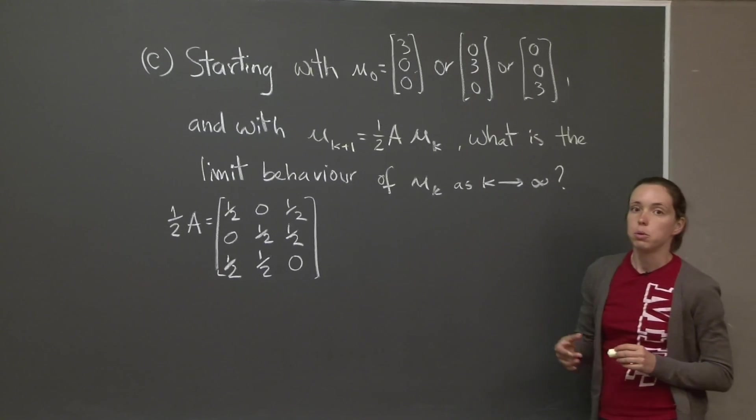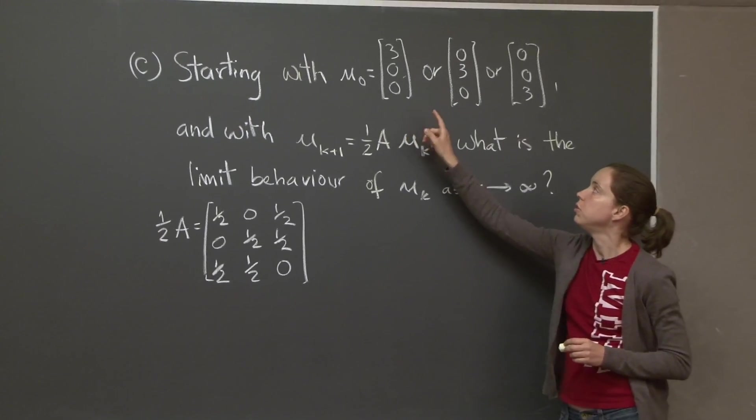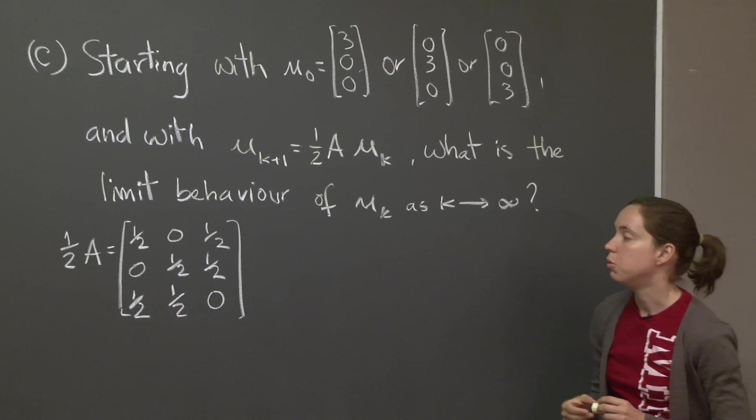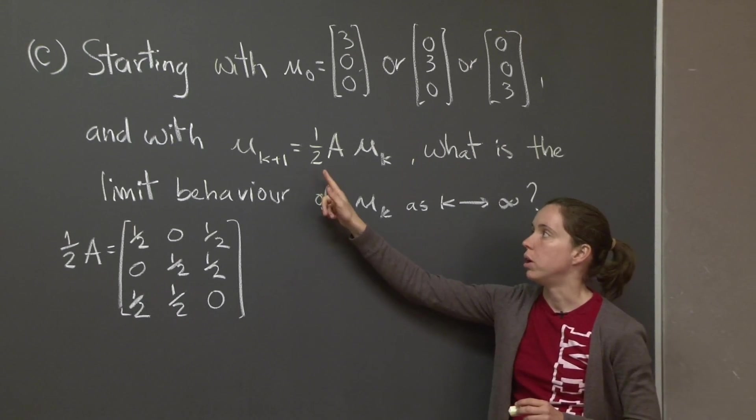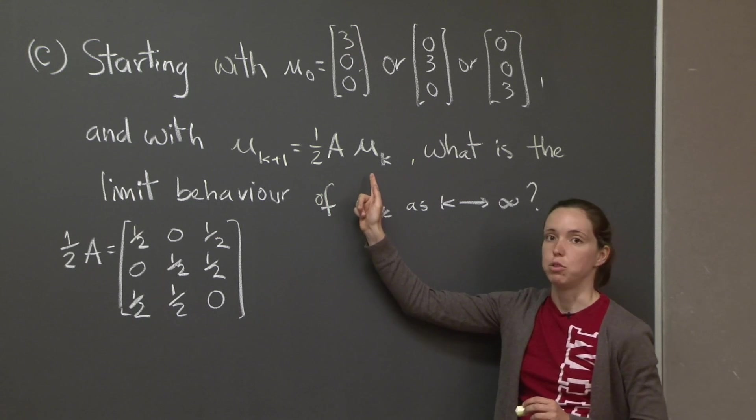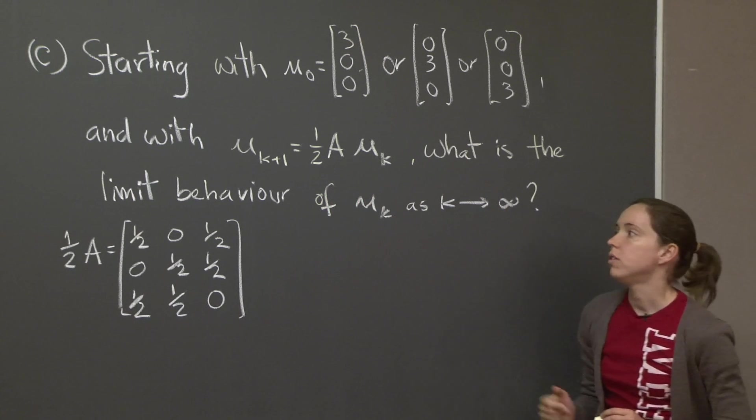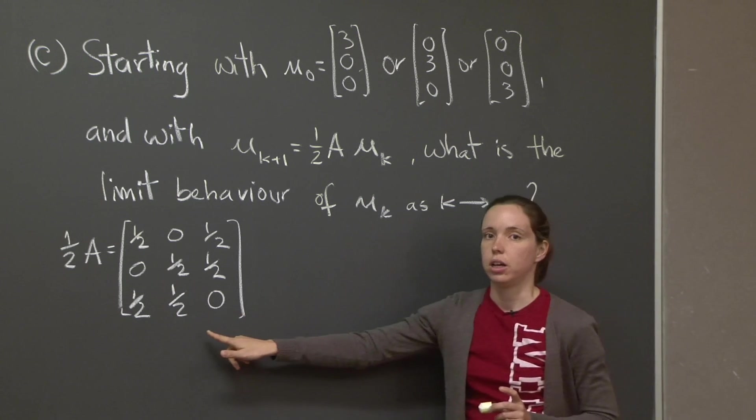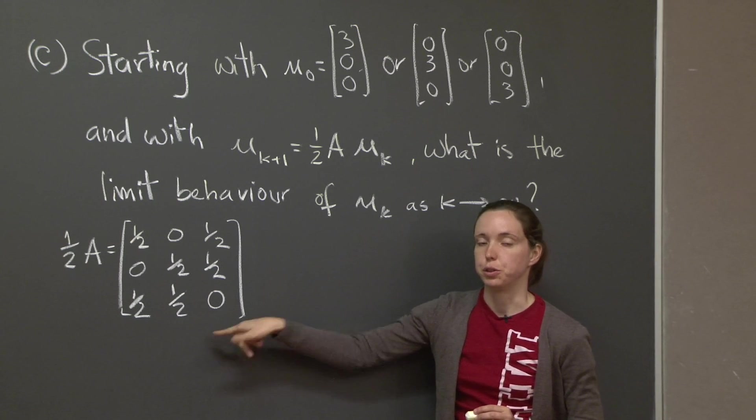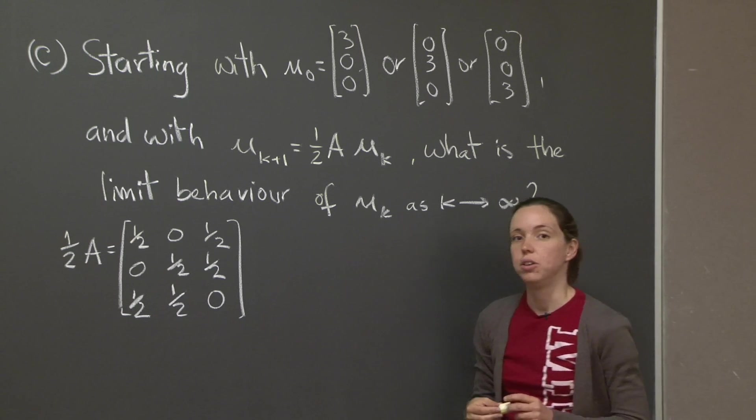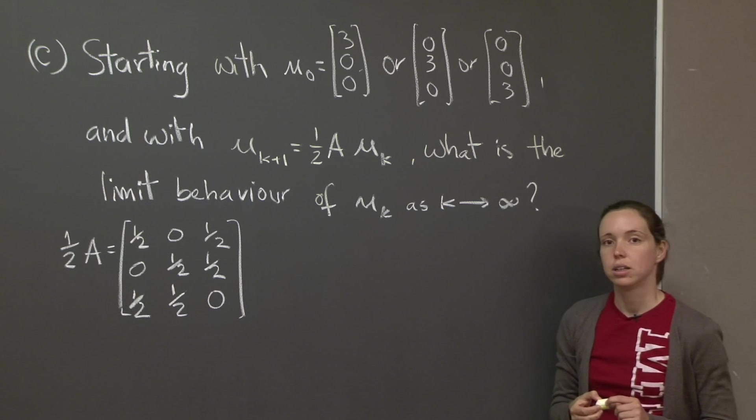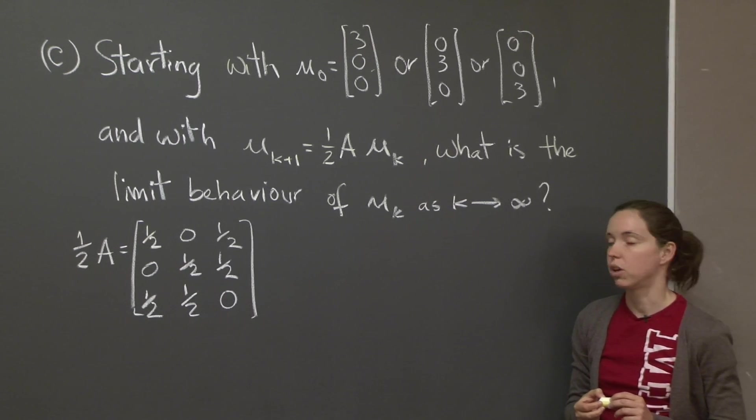It says, starting with one of these three vectors, 3, 0, 0, or 0, 3, 0, or 0, 0, 3. And with u equals to a half of A times u, what is the limit behavior of u as k goes to infinity? I've written the matrix one half of A here for your convenience. And now, you can hit pause and work on it. And when you're ready, we'll get back and solve it together.